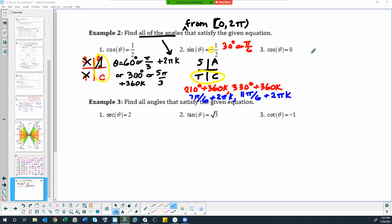So question three, cosine is zero. So cosine is zero when x is zero. So x is zero on the y axis. So that would either be here at pi halves or down here at three pi halves. Those are the two places where cosine would equal zero.